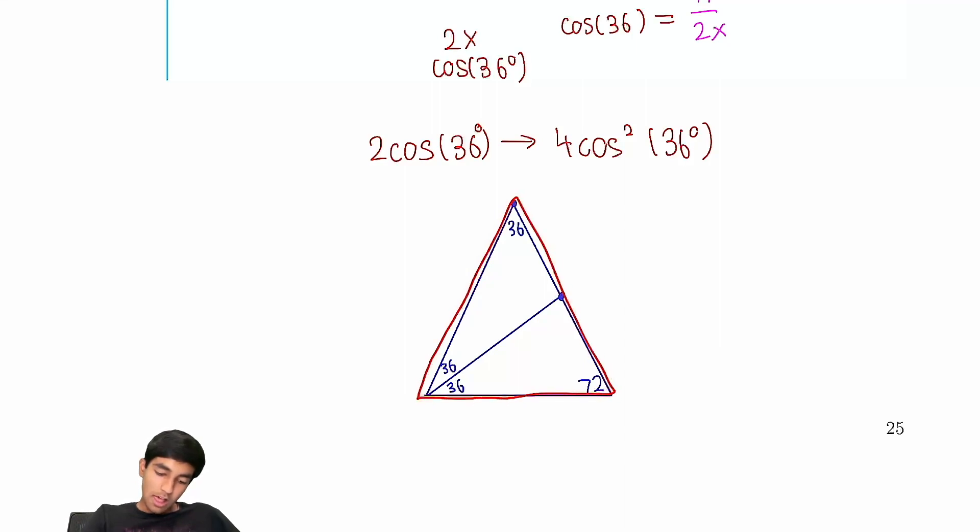So we'll take a look here. We've got a 36, 72, 72 triangle. And then over here, we've got 36, 72, 72 triangle on the inside. And because this is 36, we've got 36 here. So let's just say this thing is 1. Or, you know what, let's just call it x, actually.